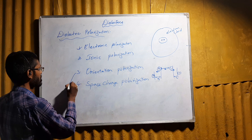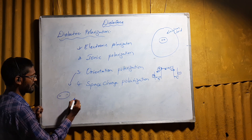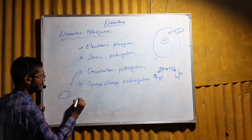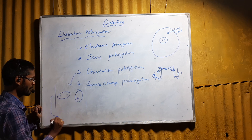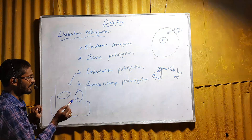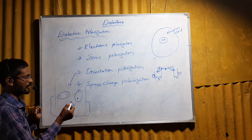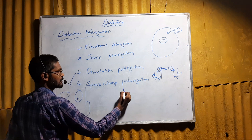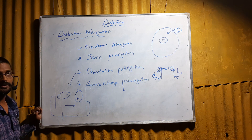In orientation polarization, some dielectric materials contain dipoles. In some cases, these dipoles are oriented in different directions. On application of electric field, these dipoles orient themselves in the direction of the electric field. This orientation produced in electric dipoles is called orientation polarization.